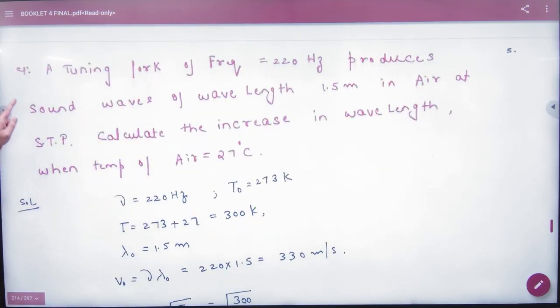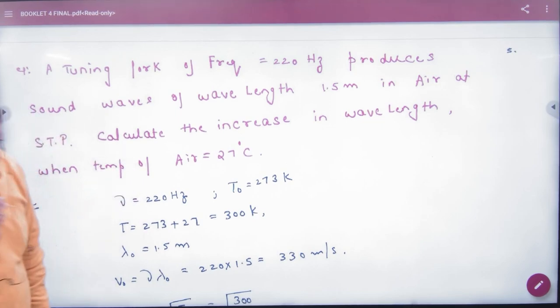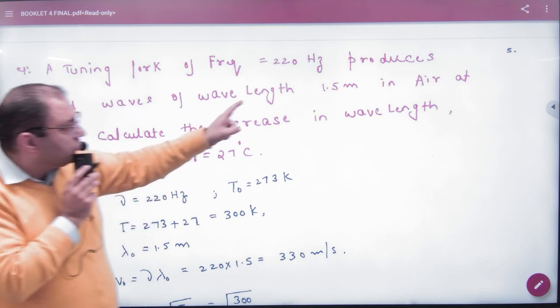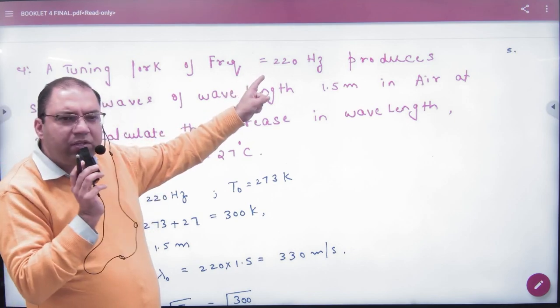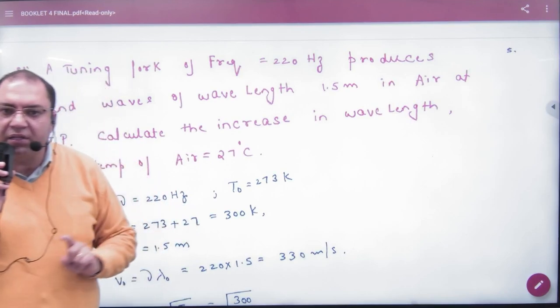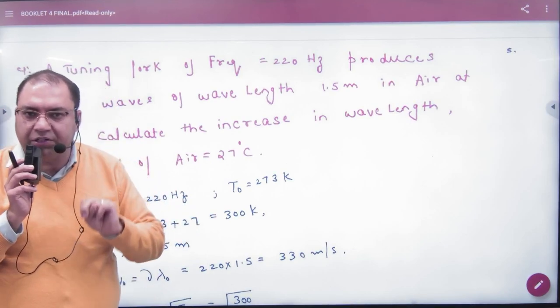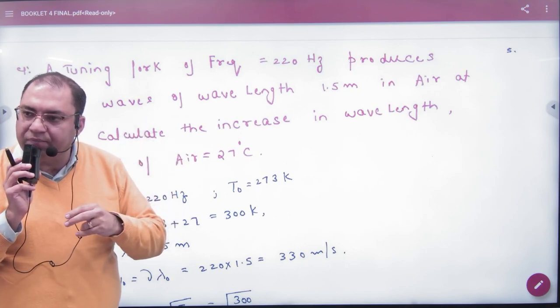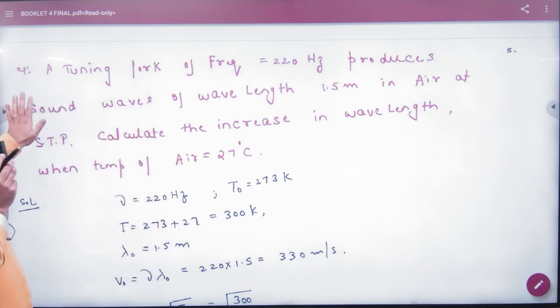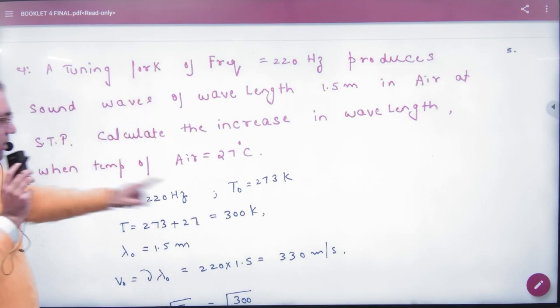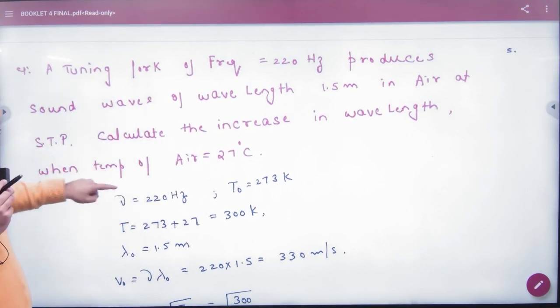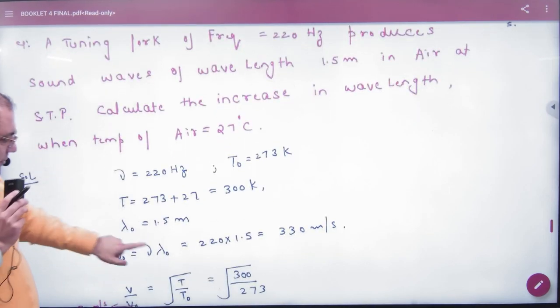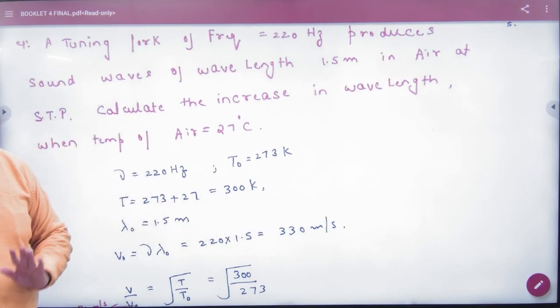Jaise tuning fork jiski frequency 220 hertz hai produces sound wave aur wavelength given hai. Jab bhi aapko tuning fork ki bhi frequency aur wavelength given hai, to aap maha se kya nikal sakti ho: v velocity nikal sakti ho. V kya hota hai: nu lambda. Multiply karke aap kya nikal sakti ho: velocity. Ab yeh poora process STP pe ho raha hai, 273 kelvin pe ho raha hai. Frequency pata hai, temperature 300 kelvin pata hai.